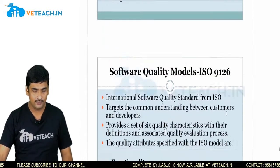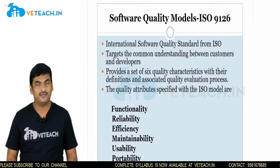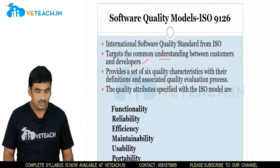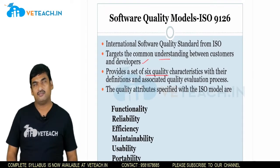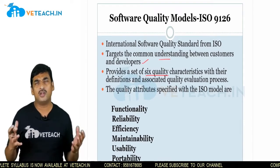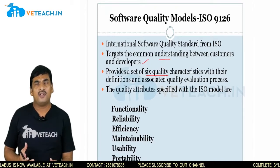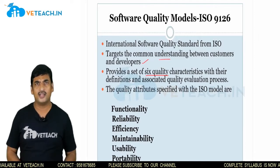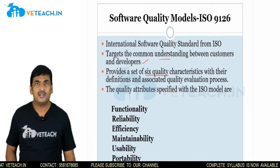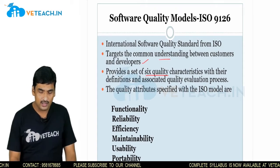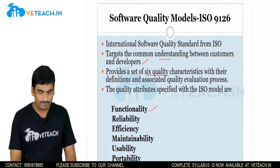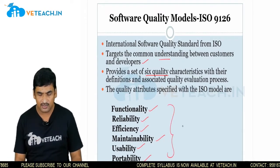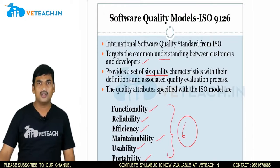ISO 9126 is an international software quality standard from ISO. It targets common understanding between customers and developers, and is based on six quality characteristics. The quality attributes specified are: functionality, reliability, efficiency, maintainability, usability, and portability. Considering these six quality attributes, the ISO 9126 model is formulated.